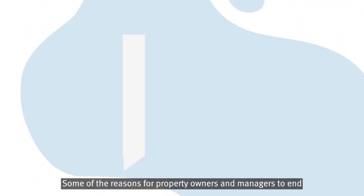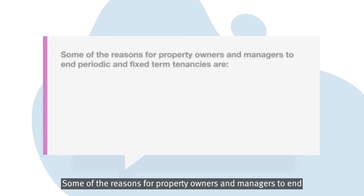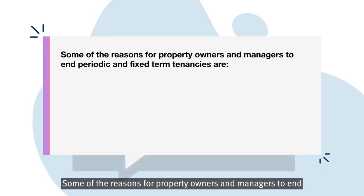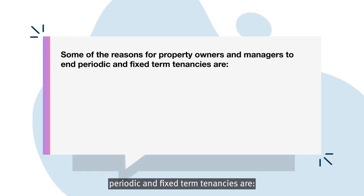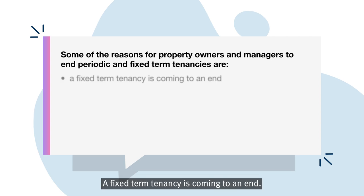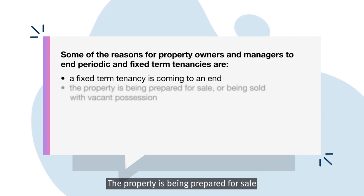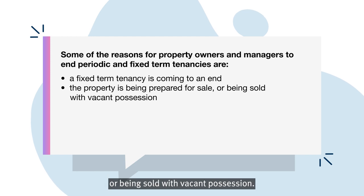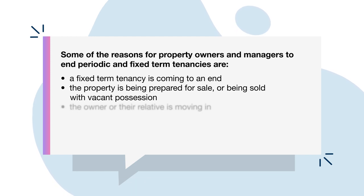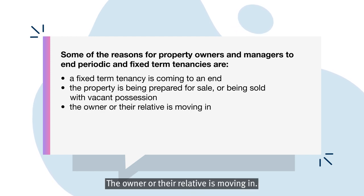Some of the reasons for property owners and managers to end periodic and fixed-term tenancies are: a fixed-term tenancy is coming to an end, the property is being prepared for sale or being sold with vacant possession, or the owner or their relative is moving in.